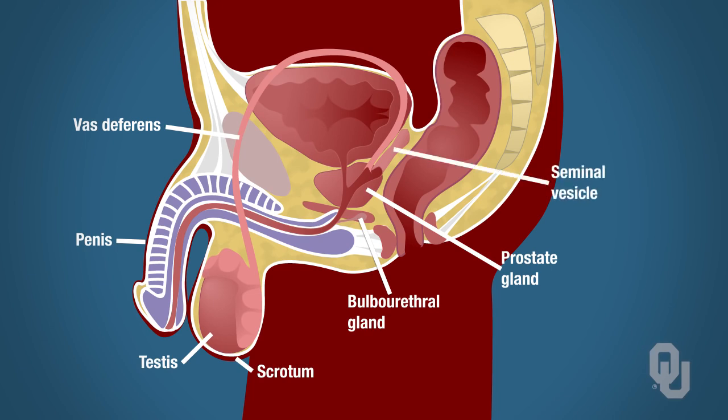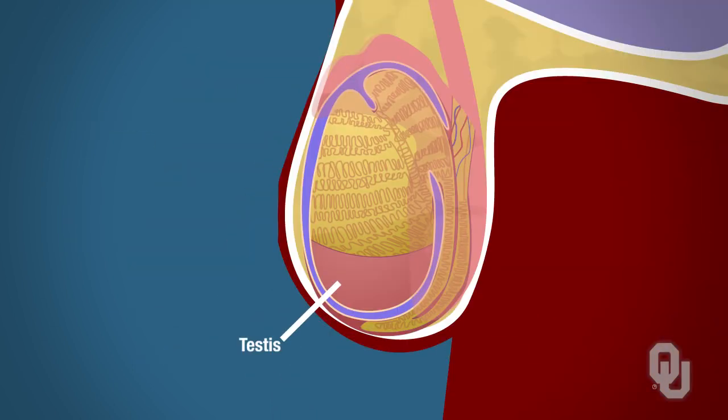You have to have a basic understanding of location in order to understand function and how all these structures work together. We will begin with the testes, the male gonad. This is a diagram of a longitudinal section through one testicle, so you can now see what's inside.